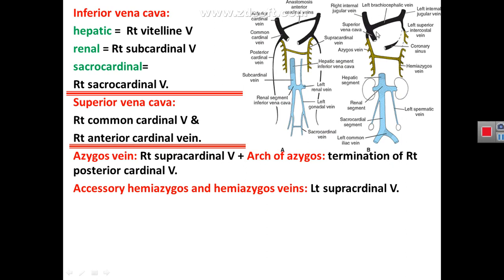The superior vena cava is derived from the right common cardinal vein and the right anterior cardinal vein. The azygous vein is derived from the right supracardinal vein, but the proximal part — the arch of the azygous vein connected to the superior vena cava — is derived from a remnant of the posterior cardinal vein. The accessory hemi-azygous and hemi-azygous veins are derived from the left supracardinal vein.